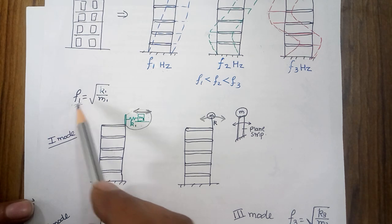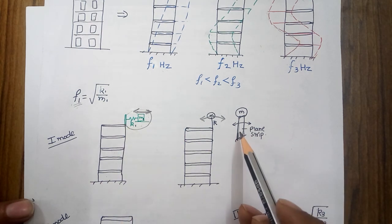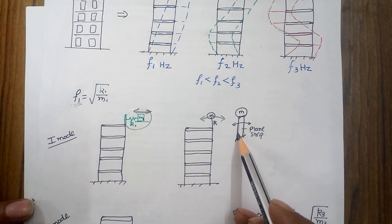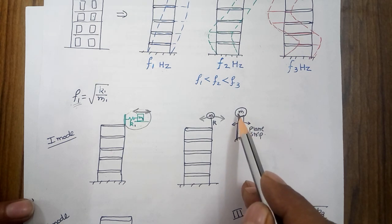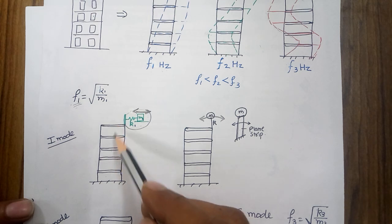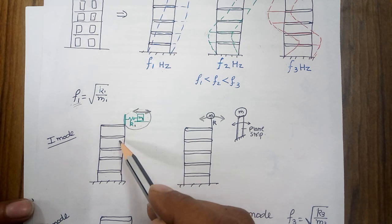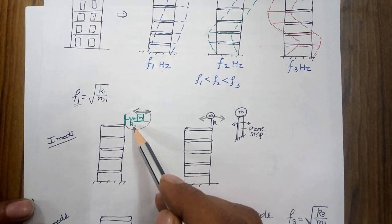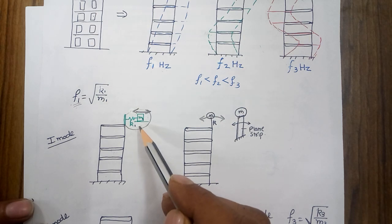I will make a vibration absorber using √(k1/m1) equal to f1, and I will add this vibration absorber at the top mass. I can also use a different type of vibration absorber — instead of a spring-mass system, I can use a beam with a mass; both will have equal effect. When the building vibrates, the vibration absorber will absorb the vibration of the building, reducing the building's vibration while the absorber vibrates with high amplitude.